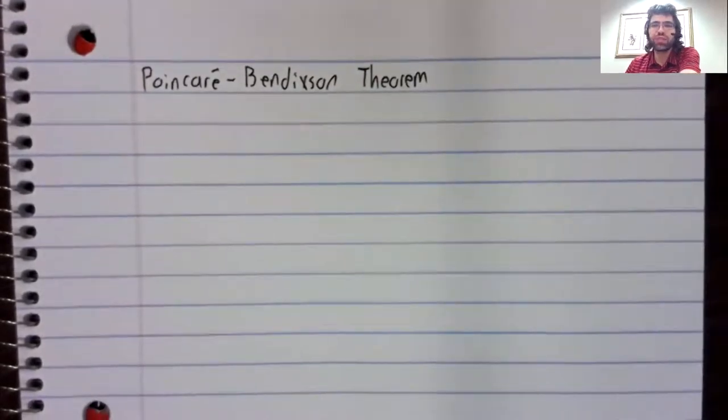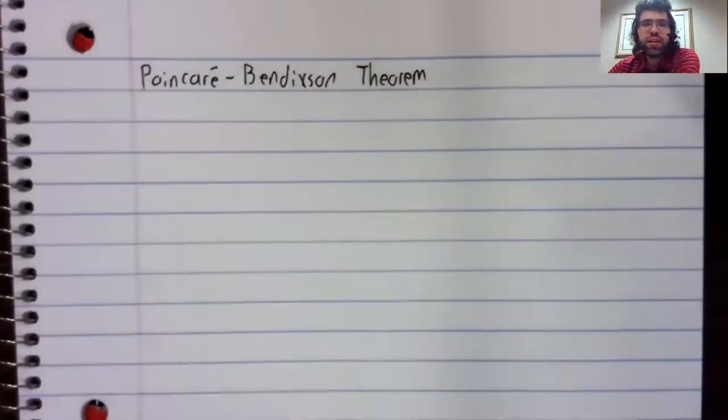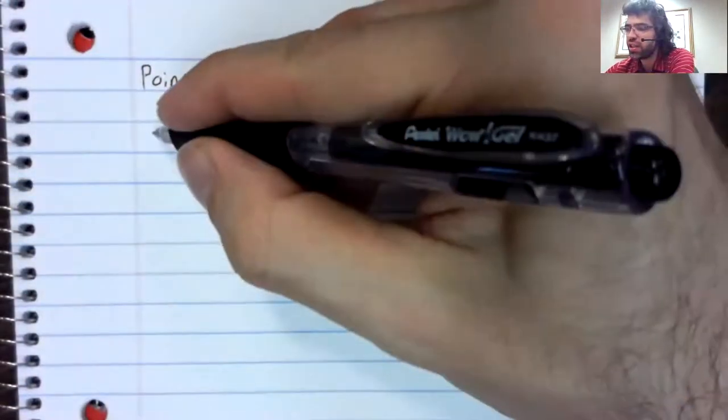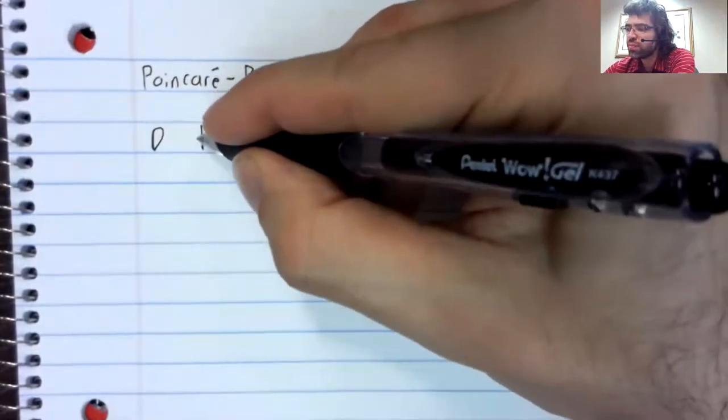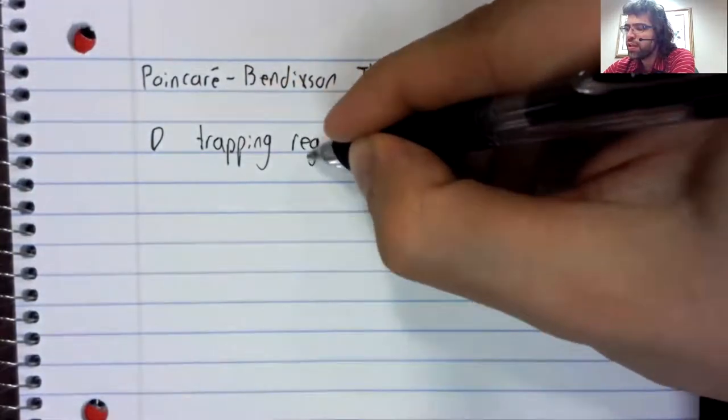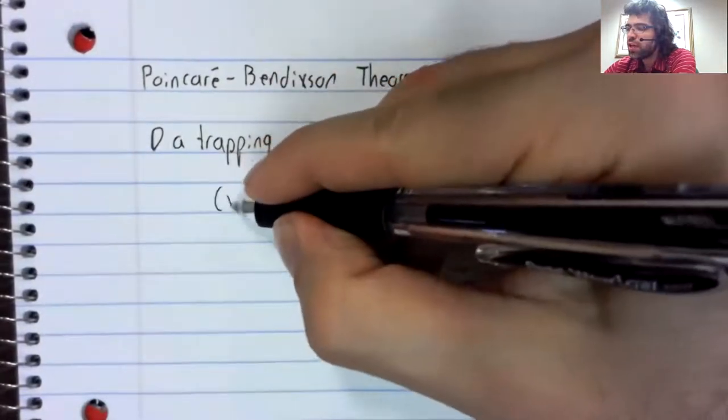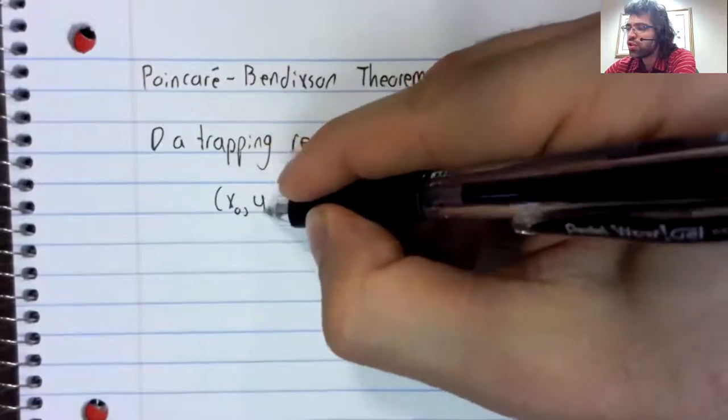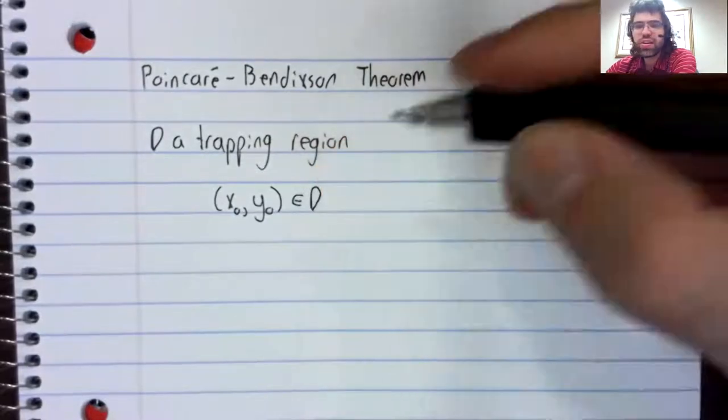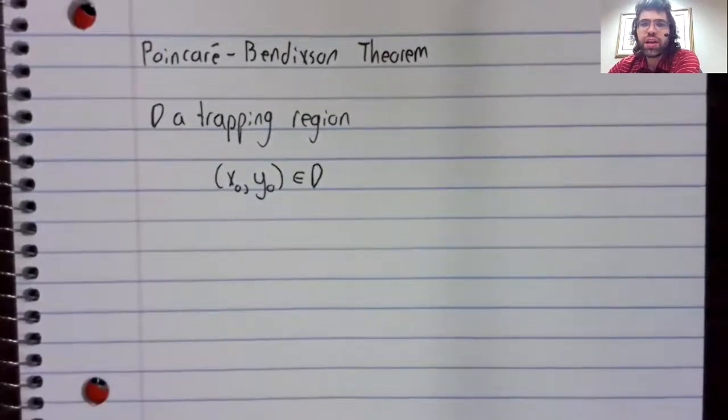The Poincaré-Bendixson Theorem involves trapping regions. You've got a trapping region D. And your trajectory starts in that trapping region. Ergo, it's stuck there forever.